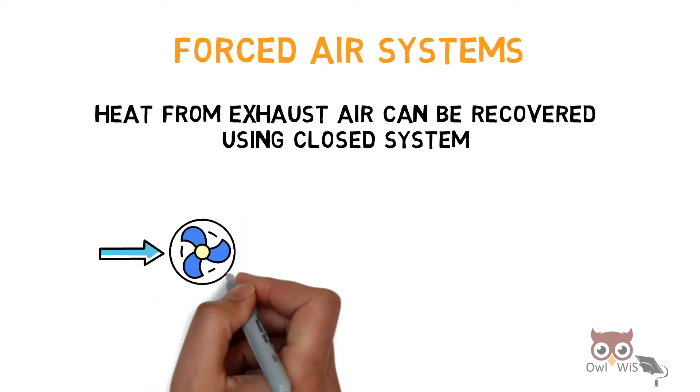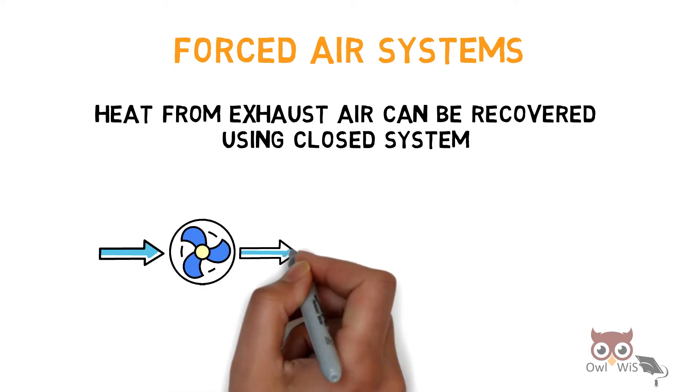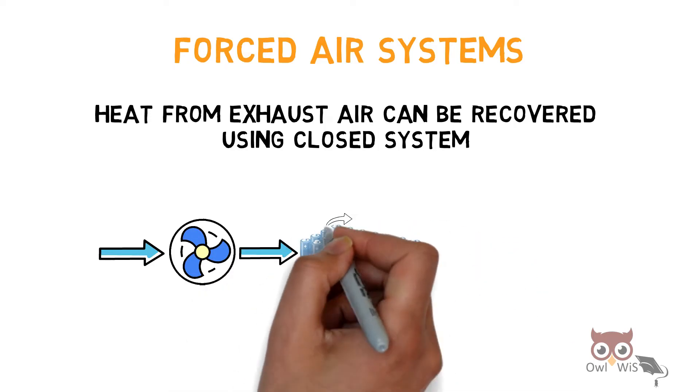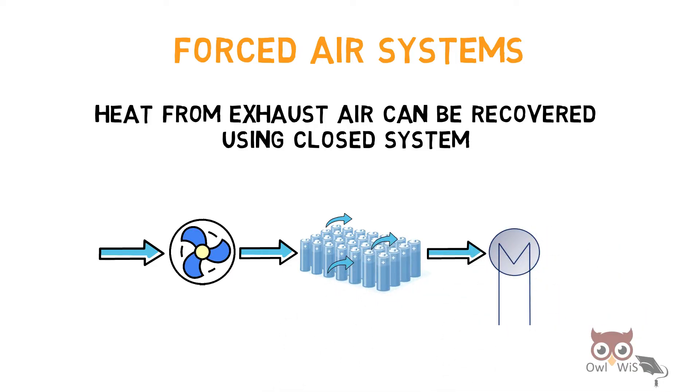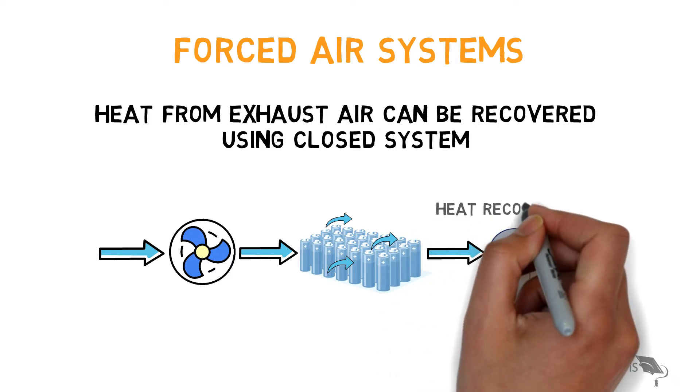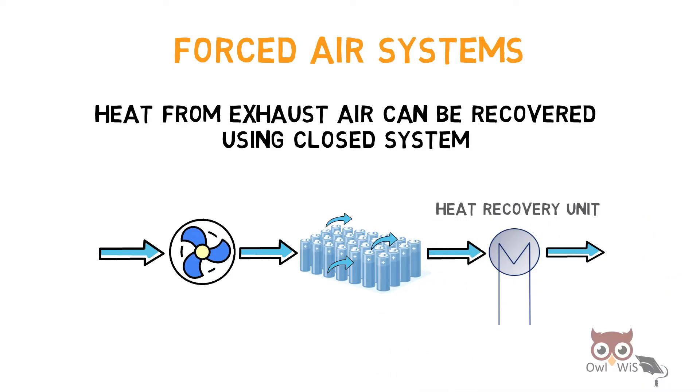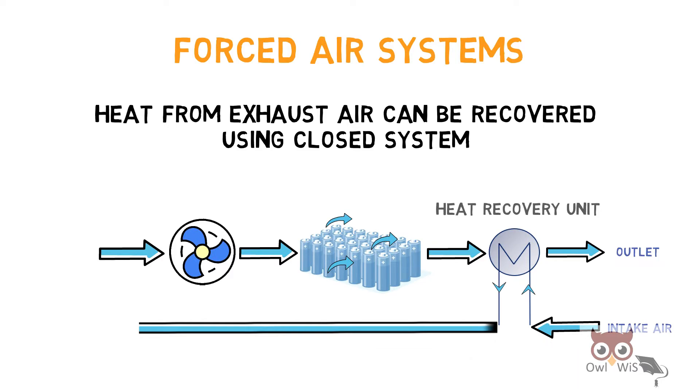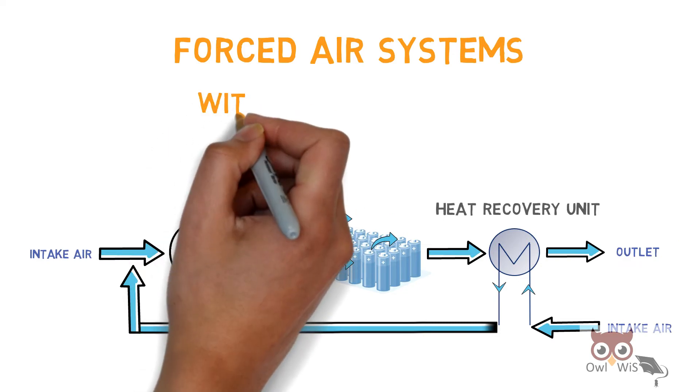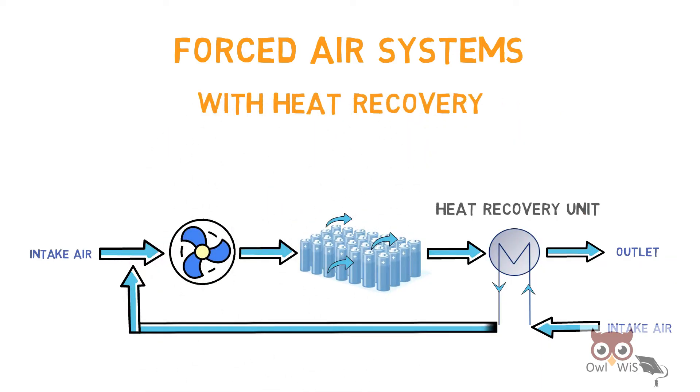The closed system consists of a blower. The air from the blower is passed through the battery pack. This air is then taken through a heat recovery unit, which recovers the heat from the exhaust air and then there is outlet for the exhaust. The intake air is passed through this heat recovery unit, which uses the heat from the exhaust to condition the air and then this air is taken in as the input to the system. This is known as forced air system with heat recovery unit.